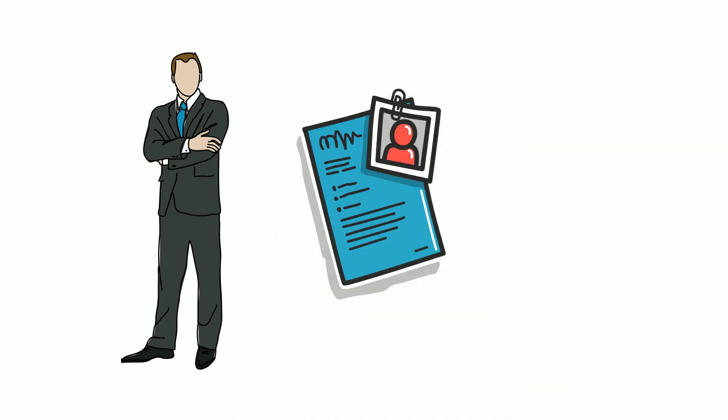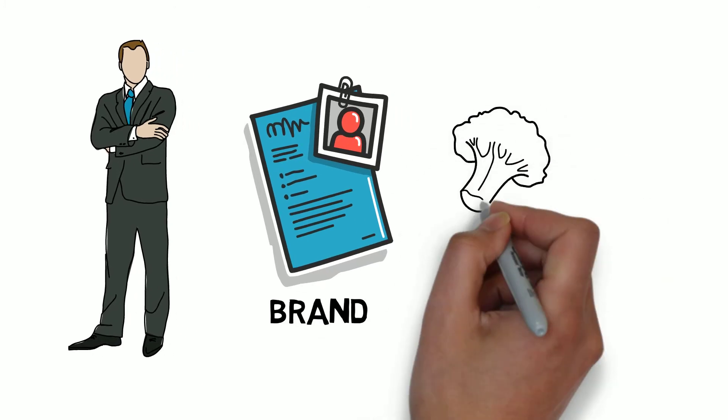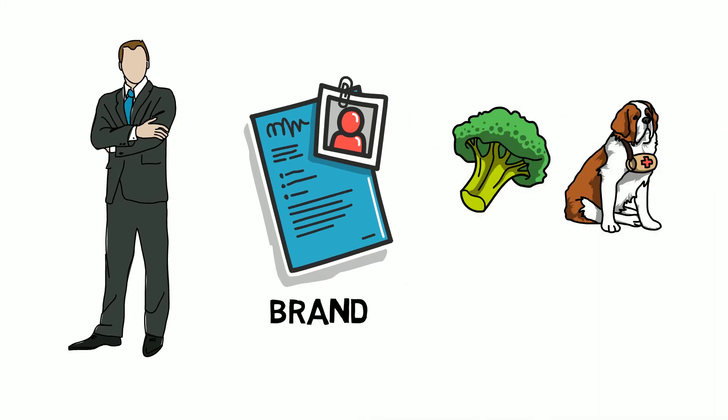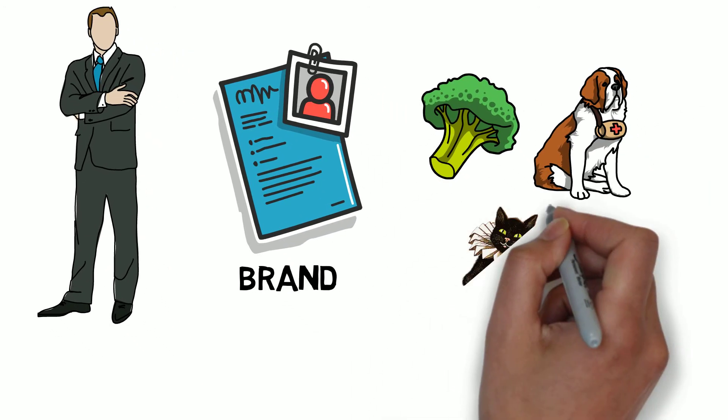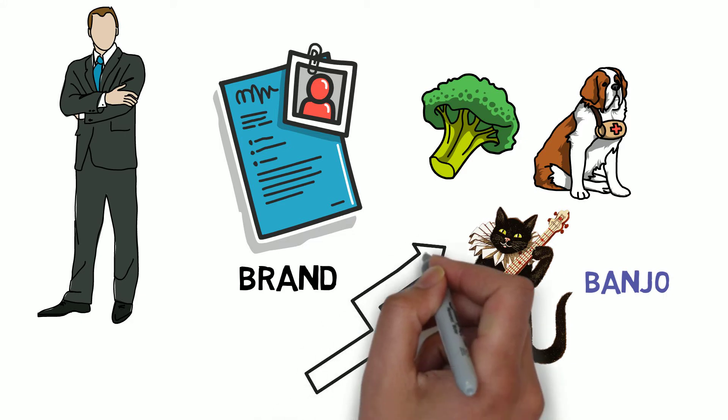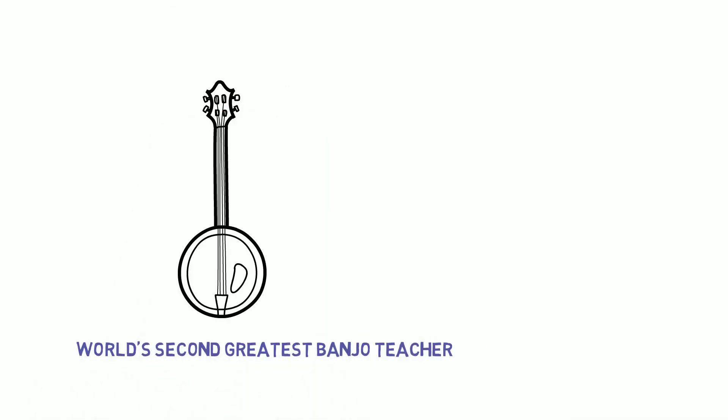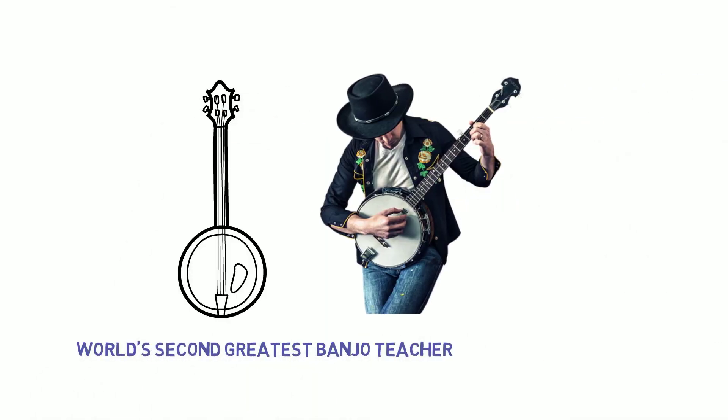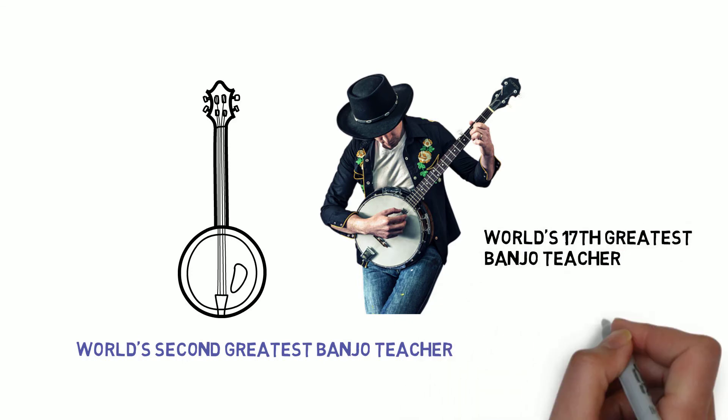The second way is, you can become an expert in something. You got to have a brand. Are you an expert in nutrition or dog? By the way, now we are getting to the point where you will probably be a specialist in the banjo. If you were the world's greatest banjo teacher on YouTube, then there's a market for you. There might be a market for the world's second greatest banjo teacher. There probably isn't the market for the 17th greatest banjo teacher.